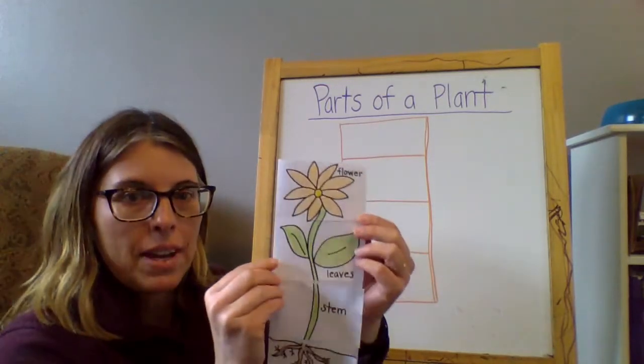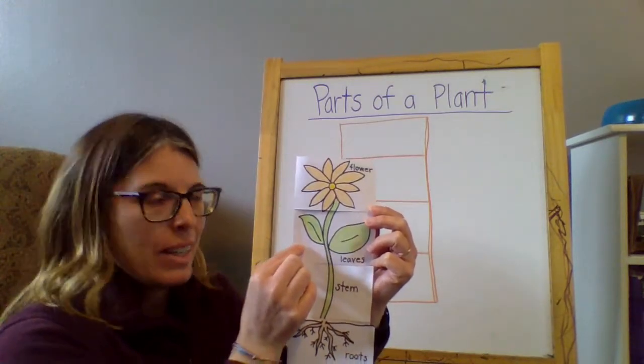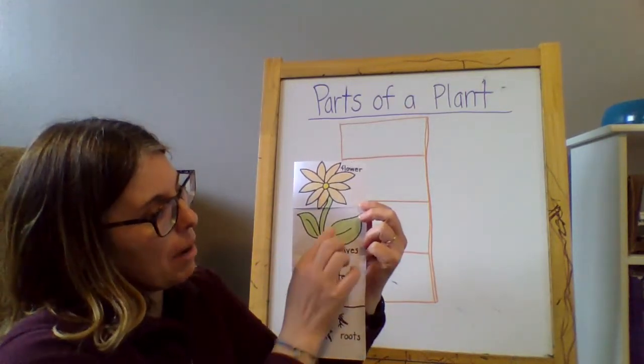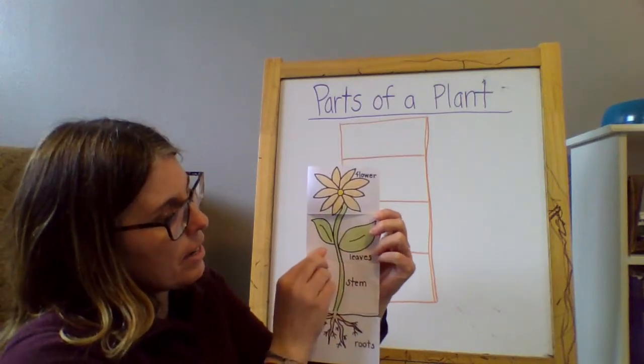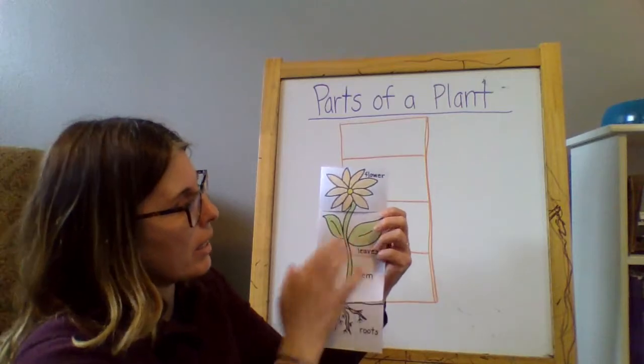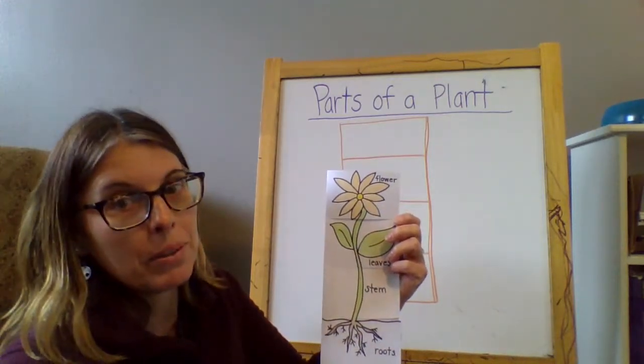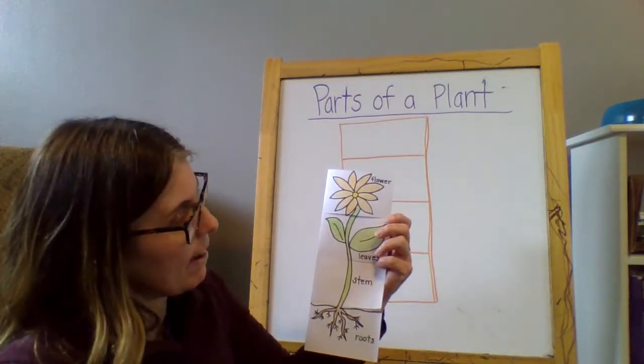Then we have the leaves. What do leaves do? Yeah. The leaves capture sunlight and oxygen and or sunlight and carbon dioxide. I'm sorry. Sunlight and carbon dioxide and turn it into food for the plant.